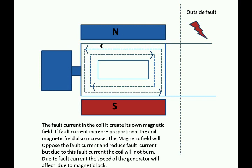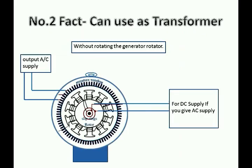Second interesting thing: we can use some generators as a transformer. In a generator, normally we give DC supply for the excitation winding. But in this case, if we give AC supply to the excitation winding and the rotor does not rotate, the generator output will produce EMF by mutual induction, like a transformer.